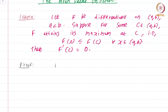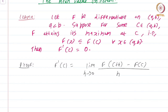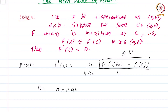Let us take the derivative at c. So f prime of c is nothing but the limit as h goes to 0 of [f(c+h) − f(c)] / h. Note that the numerator is always going to be less than or equal to 0 — it is non-positive. Why? Because the point of maximum is at c. The denominator could be positive or negative depending on whether h is greater than 0 or h is less than 0.